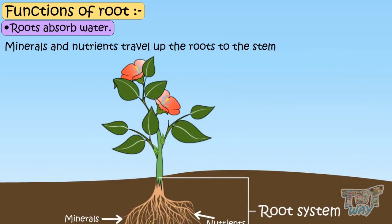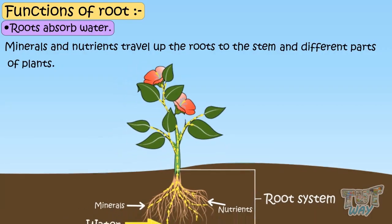Minerals and nutrients travel up the roots to the stem and different parts of plants to provide nutrition to all parts of the plant.